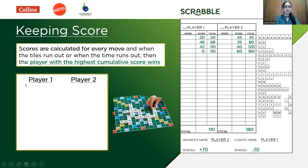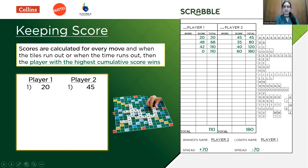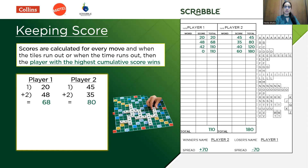The person with the highest cumulative score at the end of the game wins. Player 1 plays a four-letter word for 20 points, announces the score, writes it down, and draws four fresh tiles. Player 2 then plays a five-letter word scoring 45 points, writes it down, and takes five fresh tiles. Player 1 then makes a move for 48 points — making a total of 68 after move 2. Player 2 scores 35 points next, giving a total of 45 plus 35, which is 80 points after move 2.